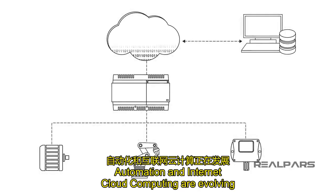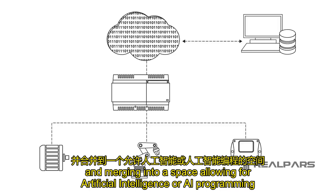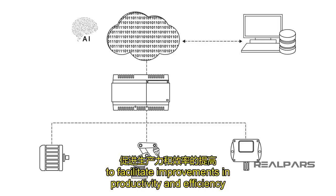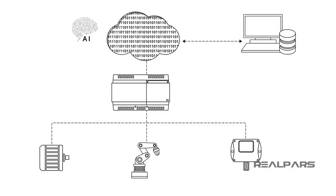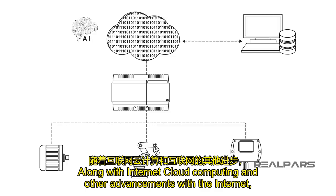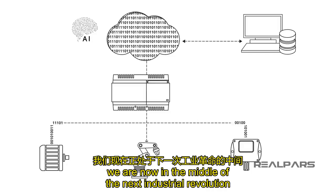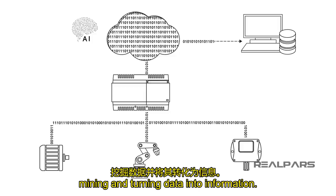Automation and Internet Cloud Computing are evolving and merging into a space allowing for artificial intelligence, or AI programming, to facilitate improvements in productivity and efficiency with many economic benefits. Along with Internet Cloud Computing and other advancements with the Internet, we are now in the middle of the next industrial revolution, mining and turning data into information.